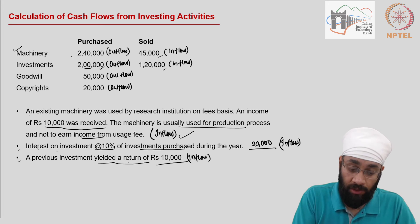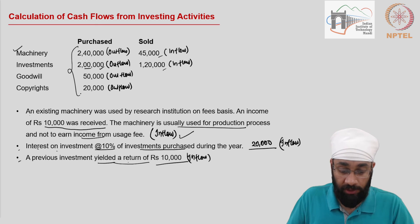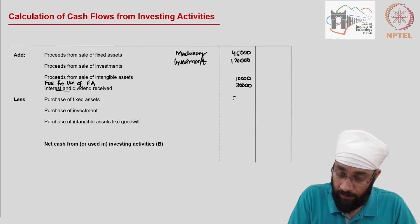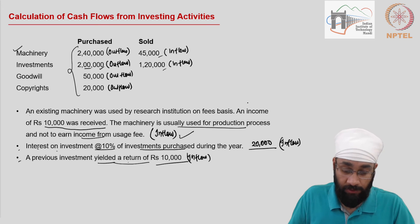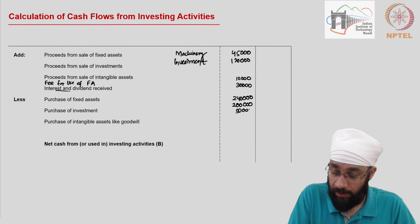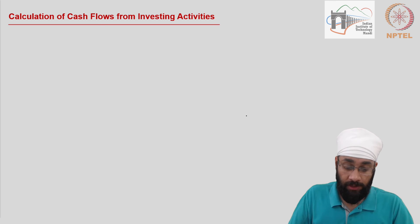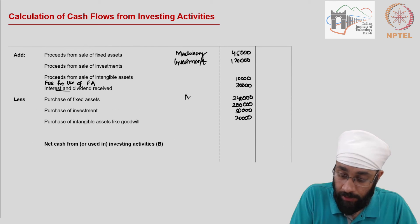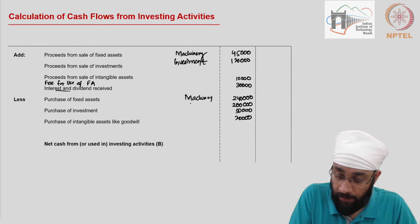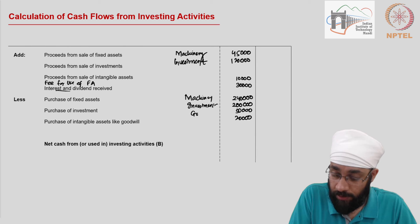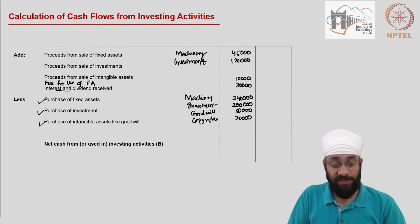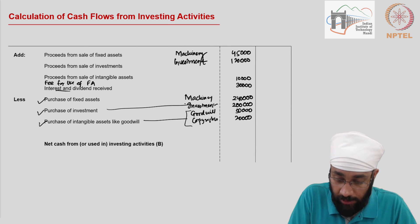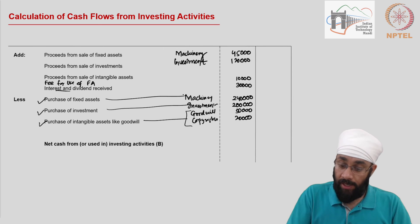Then you have the outflows. Outflows include four items: 240,000 for machinery, 2 lakhs (200,000) for investment, 50,000 for goodwill, and 20,000 for copyrights. So you have purchase of fixed assets, purchase of investments, and intangibles as well — all three items are covered. These are all outflows.